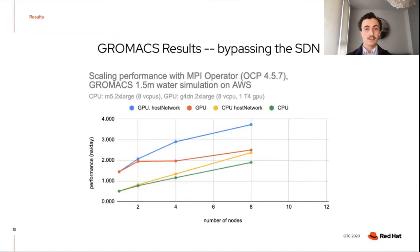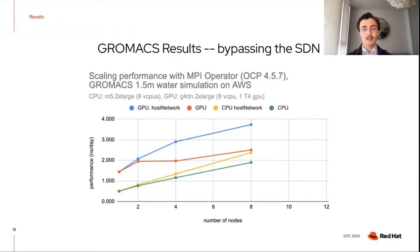The good news is that the SDN can be bypassed without giving pods these privileges, using something called Multus, which enables us to set up an additional network for the MPI pods to use — ideally on a separate high-speed interface. We don't have numbers for this on AWS yet, but initial tests on a bare-metal OpenShift cluster showed that running this same GROMACS workload using a secondary network with Multus gave the same performance as enabling host network.